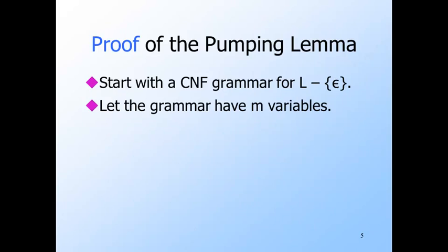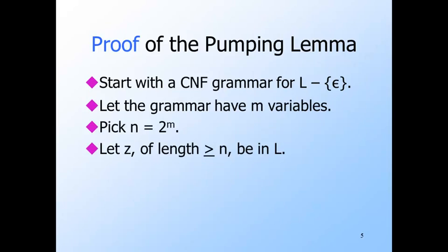This CNF grammar has m variables for some m. So we're going to let N be 2^m. And now let's consider any string Z in L of length at least N, that's 2^m again.